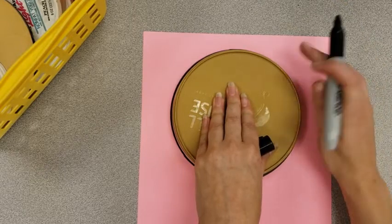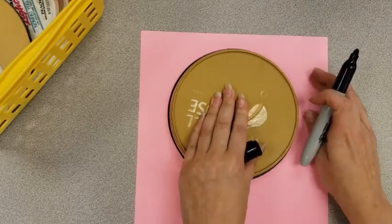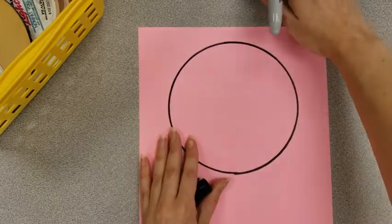I'm making sure that my pencil is on the pink paper and not on the tracer because if I'm drawing on the tracer I won't have a circle left on my paper for me.